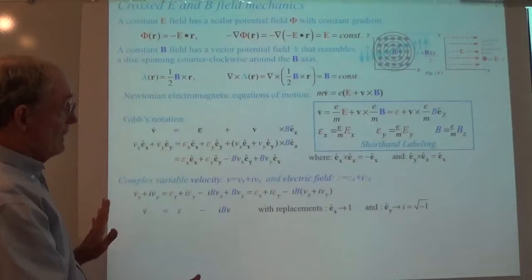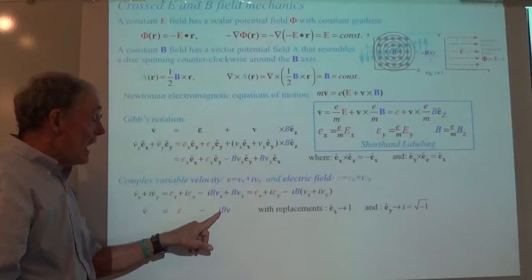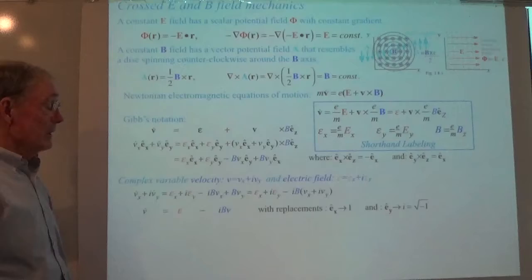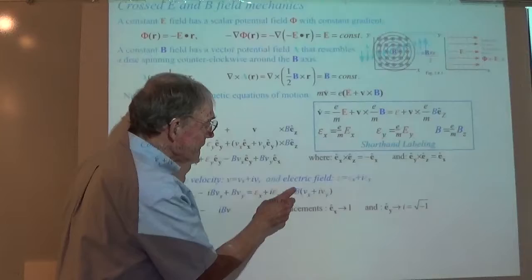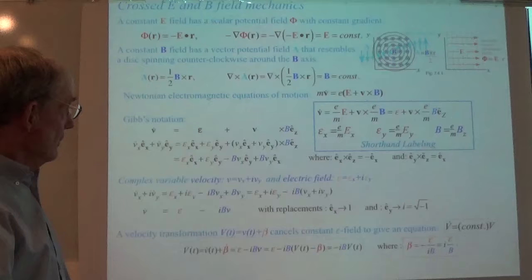Our new equation is v-dot equals epsilon — a complex epsilon — minus i times the complex velocity. That's what happened when we took that part of the Gibbs notation and turned it into a complex variable. We've got this i·v, and i rotates by 90 degrees — that's what makes the y-coordinate out of the x-coordinate.